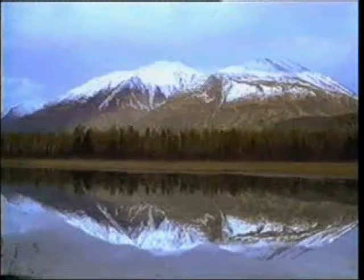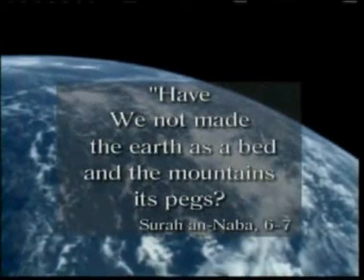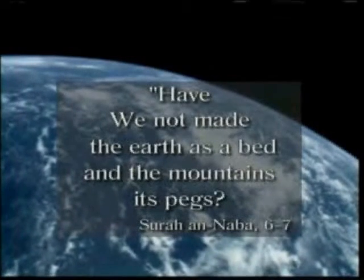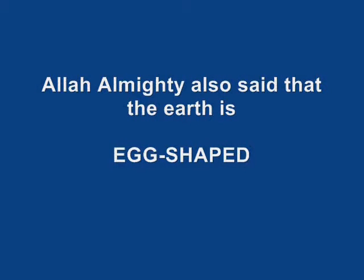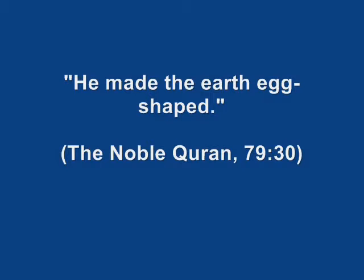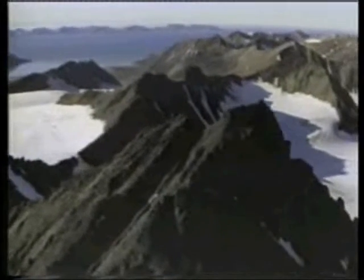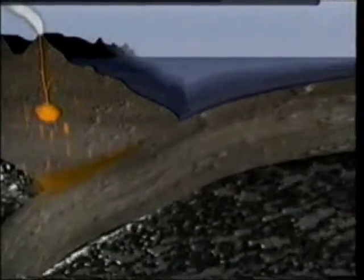In a verse, this role of the mountains is pointed out through a comparison with pegs: 'Have we not made the earth as a bed and the mountains its pegs?' Mountains clench the plates in the earth's crust together by extending above and beneath the earth's surface at the conjunction points of these plates. In this way, they fix the earth's crust and prevent it from drifting over the magma stratum or among its plates. Briefly, we may liken mountains to nails that keep wood pieces together.